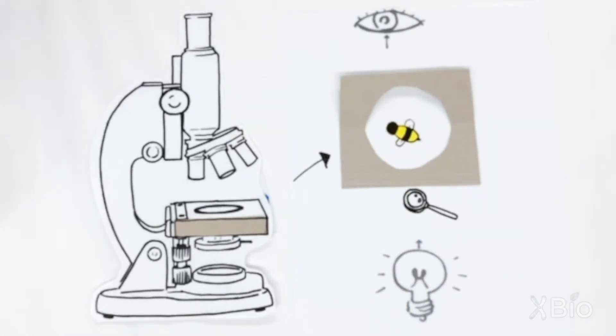But now we want to specifically look at the brain of this bumblebee. With light microscopy, we can't really tell the difference between different structures.